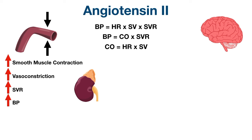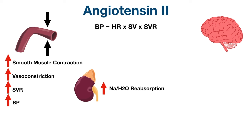Angiotensin 2 also has effects on the kidney. It can directly stimulate sodium and water reabsorption at the proximal tubule of the nephron. If we reabsorb sodium and water from the kidney back into the bloodstream, this increases blood volume, which increases stroke volume, which increases cardiac output, and as we can see from the equation, an increase in stroke volume will increase blood pressure.